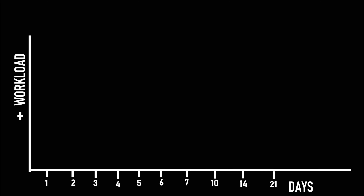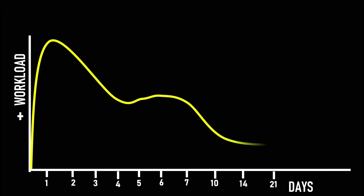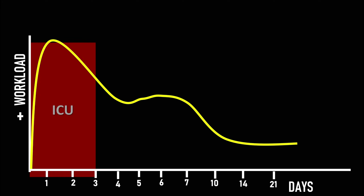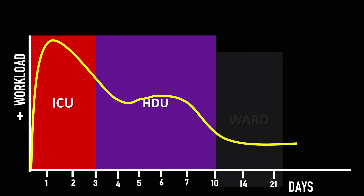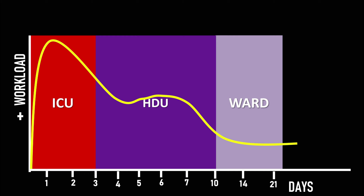If you look at the workload of patients during their time in the ICU, there is a huge amount of work in the first 24 hours when the patient is in the ICU itself. Subsequently the workload drops off as patients recover. They may have a secondary complication and it may rise again, but generally things are favourable. This likely happens in the high dependency unit, and then the patient goes out to the ward and then to rehab.